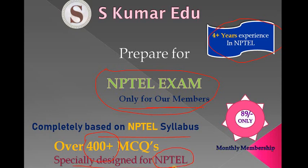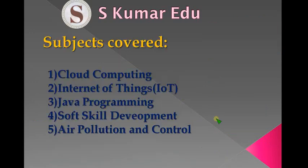It is specially designed for NPTEL students and we are giving it at the cheapest price — 89 rupees only. You can get more than 400 MCQs in four or five parts for each subject. Subjects covered include cloud computing, Internet of Things, Java programming, soft skill development, and air pollution and control.